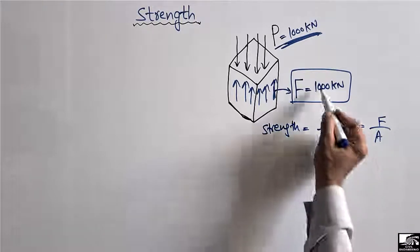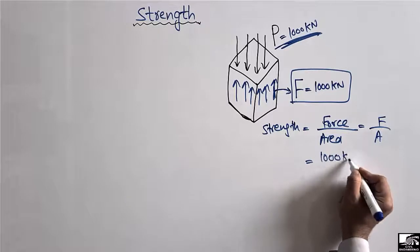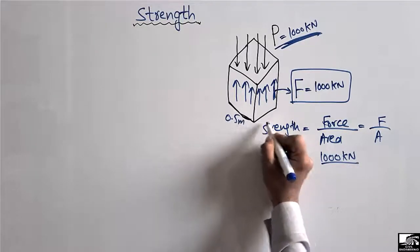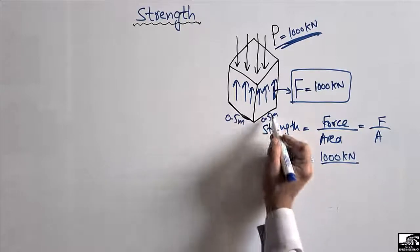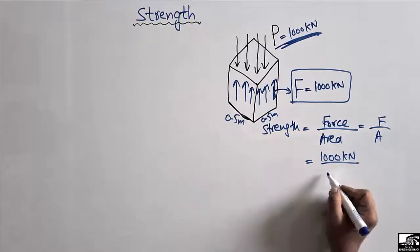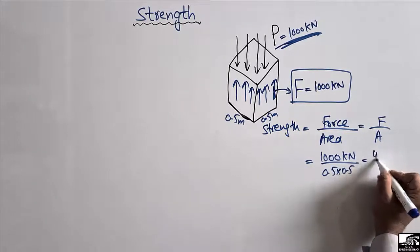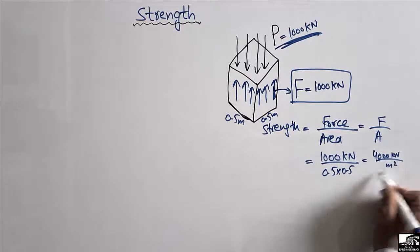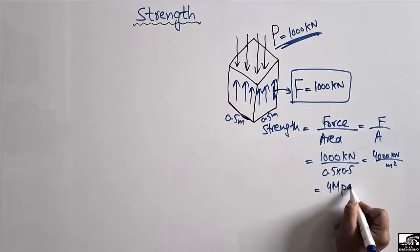Let's suppose the force is 1000 kilonewtons, and the dimensions of this concrete cube are 0.5 meter by 0.5 meter. Dividing by the area — 0.5 × 0.5 — we get 4000 kilonewtons per square meter, which equals 4 megapascals.